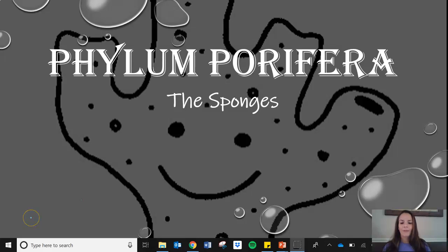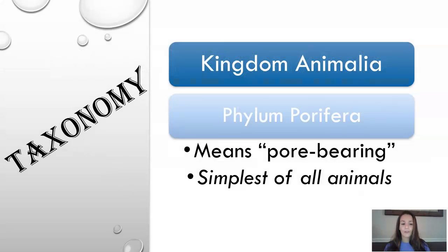Hi everybody, welcome to your sponge set of video notes. We're going to first talk about the taxonomy, the general taxonomy of sponges. This is our first real phylum that we will talk about within Kingdom Animalia. The name phylum Porifera simply means pore-bearing. Sponges are animals — they are the simplest of all animals.